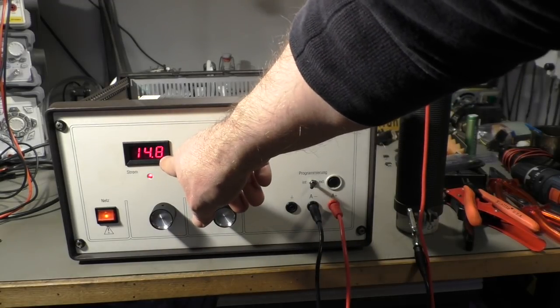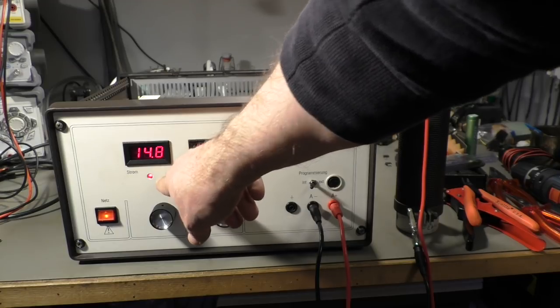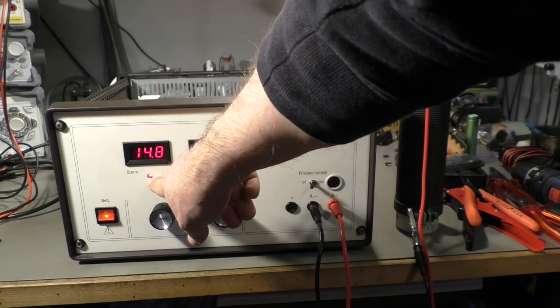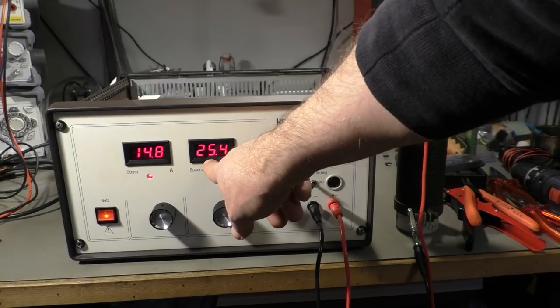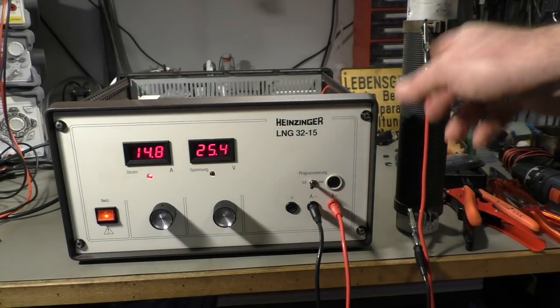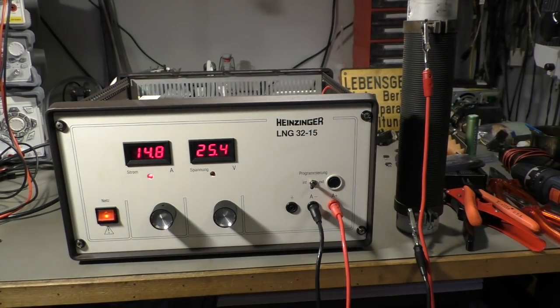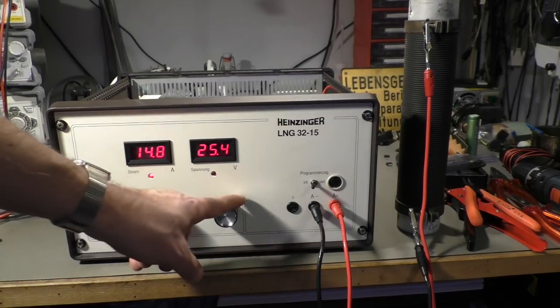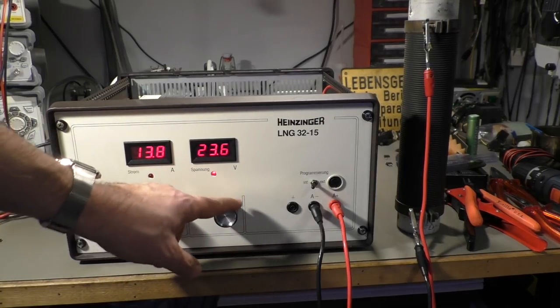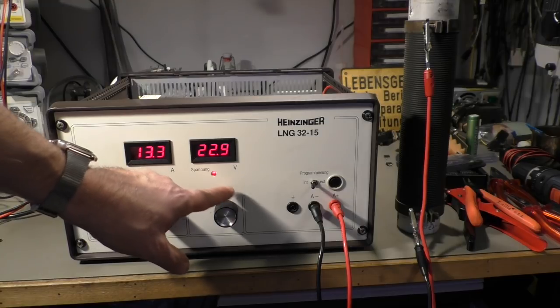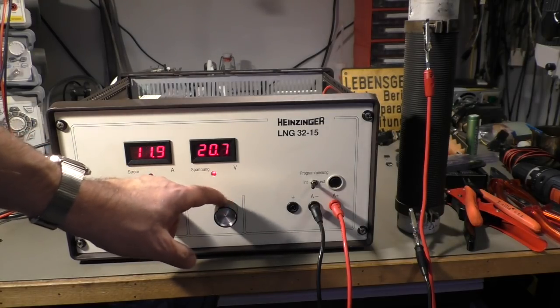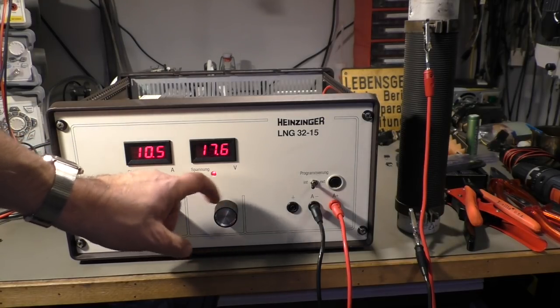We have 14.8 amps. It's limiting now to 25 volts. So that's the maximum amps here. If I turn down the volts, it jumps over to voltage regulation and not current regulation.